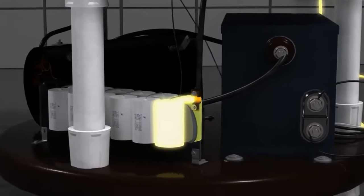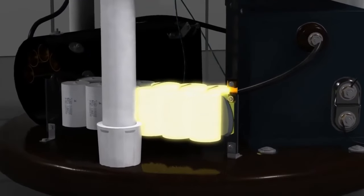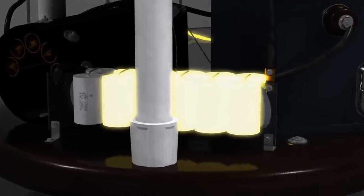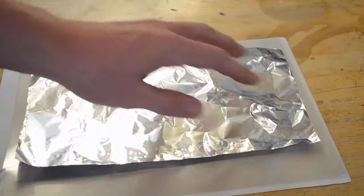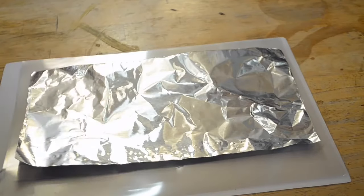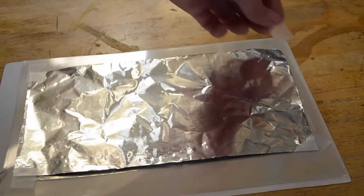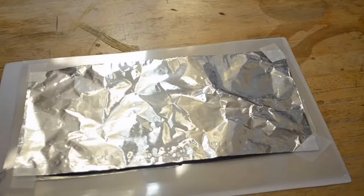Capacitors are a crucial part of every spark gap Tesla coil, since they're what actually stores the energy to create the high current pulses and they help create the tuned circuit with the primary coil. Capacitors are made by separating two conductors with a thin layer of non-conductive material called dielectric, usually some kind of plastic or glass-like material.